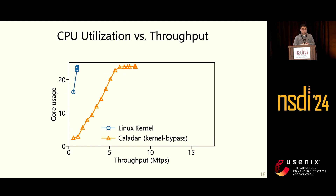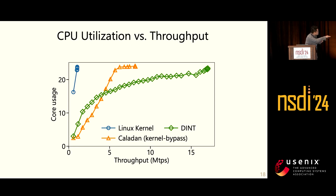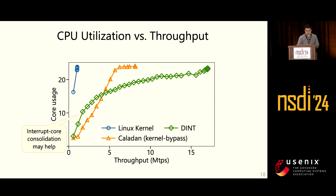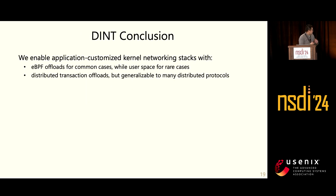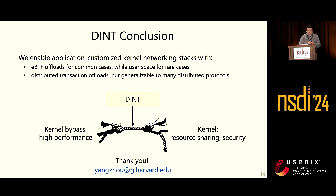DINT does have slightly higher tail latency than Kaladin due to interrupt processing. Looking at CPU utilization versus throughput, because DINT relies on interrupts, it provides good CPU scaling based on workload load. As throughput increases, DINT uses fewer cores; at lower throughput it uses slightly more cores than Kaladin, and we believe future interrupt core consolidation would help in low-load cases. In conclusion, DINT enables application-customized kernel networking stacks with eBPF offloads for common cases and user space for rare cases. While this work covers distributed transaction protocols, the approach is generalizable to many other distributed protocols and their key building blocks. The code is open-sourced — feel free to try it.